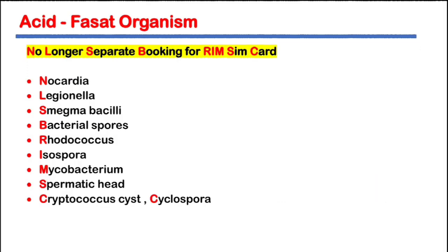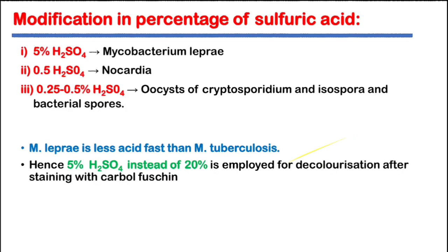The mnemonic to remember acid fast organisms: mainly remember Nocardia, Legionella, bacterial spores, Isospora, Mycobacterium, and Cryptosporidium/Cyclospora.